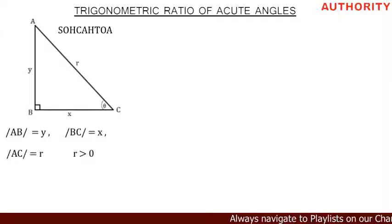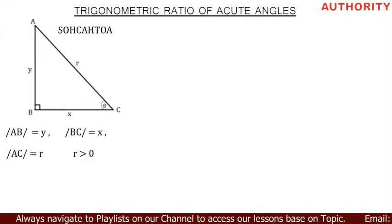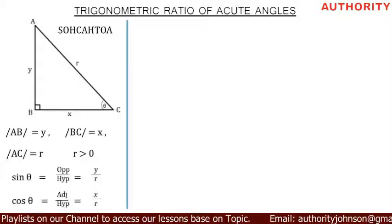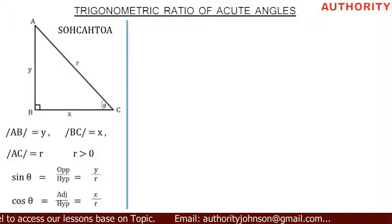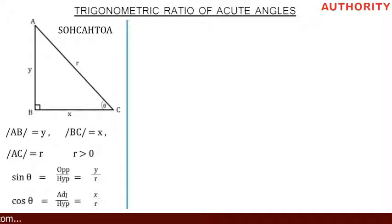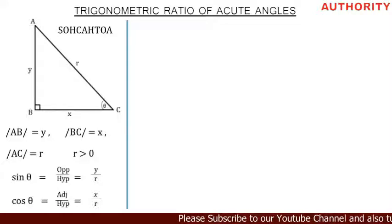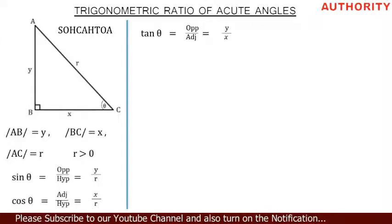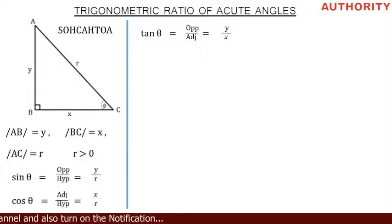Let's make use of SOH-CAH-TOA. Sine theta gives you opposite over hypotenuse. In this triangle, the opposite is y and the hypotenuse is r, so sine theta equals y over r. Cos theta gives you adjacent over hypotenuse, so cos theta equals x over r. Tan theta is opposite over adjacent, so tan theta equals y over x.